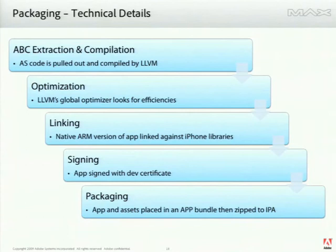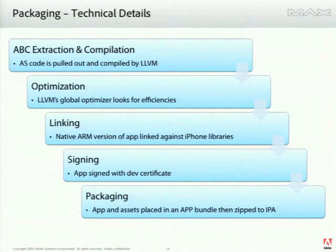After we've extracted the code and compiled it, we're actually going through an optimization step. One of the really cool things that LLVM does is it has this global optimizer, which basically tries to see what code is and is not being used inside your app, pull it out, and toss what's not being used. So your apps try to get slimmer, more effective, and a lot of common optimizations like loop unrolling will happen in this step.